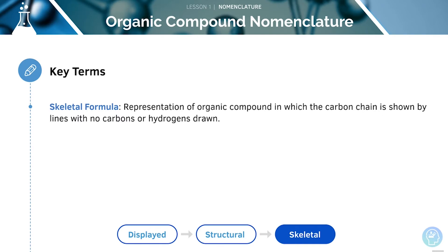Finally, we have the skeletal formula. This is a representation of the organic compound in which the carbon chain is shown by lines with no carbons or hydrogens drawn. Here we can just see the skeleton for hexane.